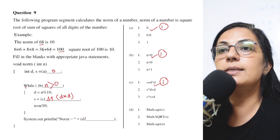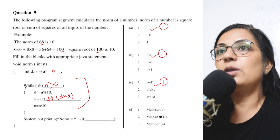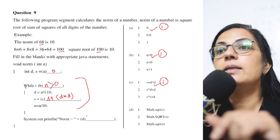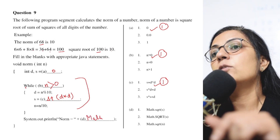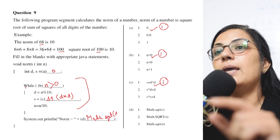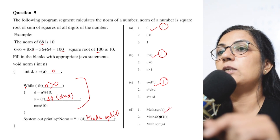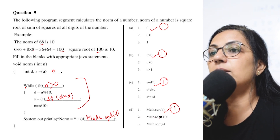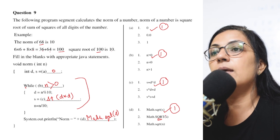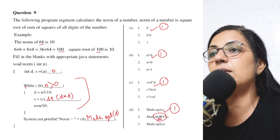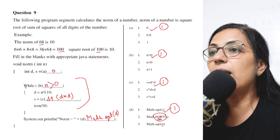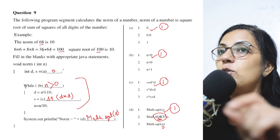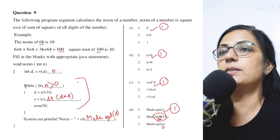After the while loop completes, you have the sum of the squares of the digits stored in S. But you still need to find the norm — that is calculated using 'Math.sqrt(S)'. Note that 'sqrt' in Java is case sensitive, so SQRT will not work — it must be 'Math.sqrt'. Also, you are finding the square root of the sum S, not of the original number entered. Option 1 is the correct answer.